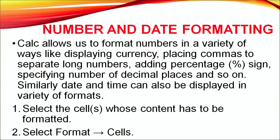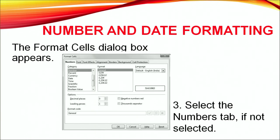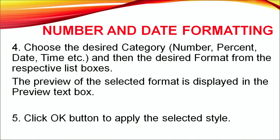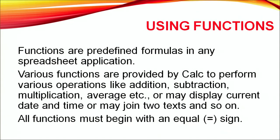The next topic is number and date formatting. Calc allows us to format numbers in a variety of ways — displaying currency, placing commas to separate long numbers, adding percentage signs, specifying decimal places, and so on. Date and time can also be displayed in various formats. Select the cell or range, click Format, then Cells. In the Format Cell dialog box, select the Number tab, choose the desired category such as number, percent, date, or time, choose the desired format, preview it, and click OK.